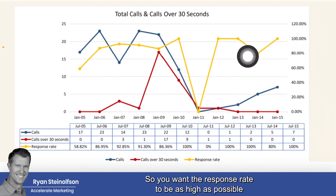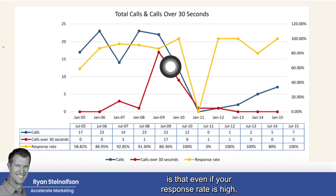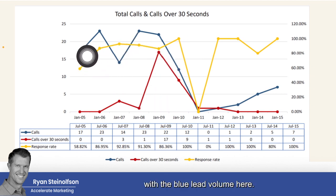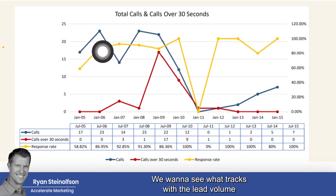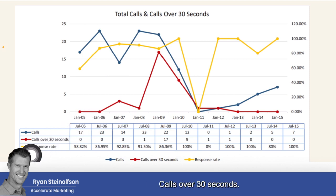You want the response rate to be as high as possible — ideally 100%. What we're finding is that even if your response rate is high, it doesn't track as well with the blue lead volume. The key is to see what tracks with lead volume over time. Look at calls over 30 seconds: there are no calls over 30 seconds on January 5th, 6th, 7th — these are by day.